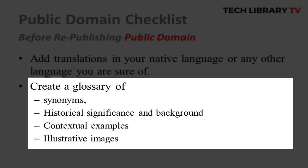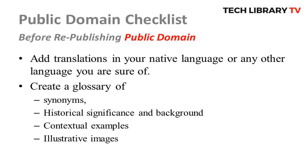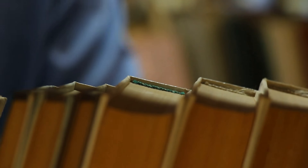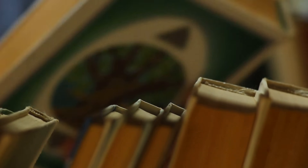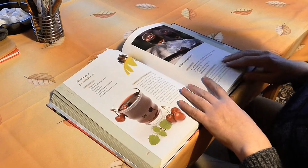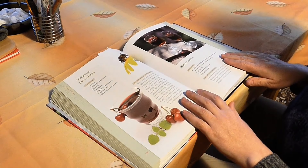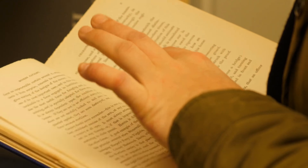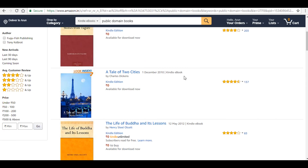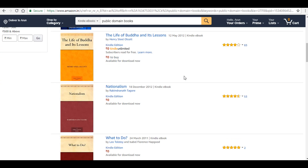Number five: another key difference you could show is to translate the work into your native language. Additionally, create a glossary of all the unusual or difficult-to-pronounce words from the book, with meanings that regular readers can understand. Especially with older books, people would love to know their historical background, contextual examples, illustrative images, and comparisons with contemporaries to help understand the complex relationships between countries or nations back then.